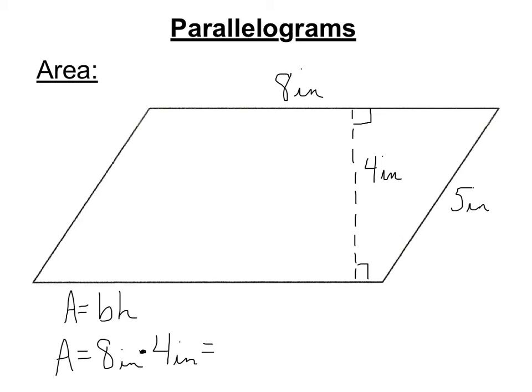And now we multiply. 8 times 4 is 32, but then inches times inches combines to make square inches. And so the area is 32 square inches. Remember that a unit times itself becomes a square unit. So centimeters times centimeters will be square centimeters. Miles times miles will be square miles, and so on.